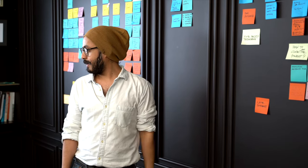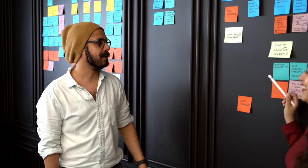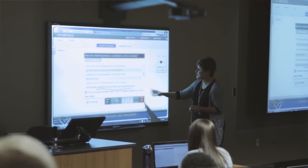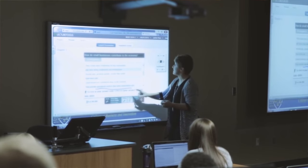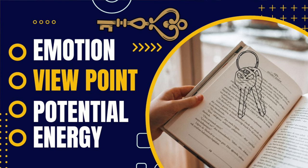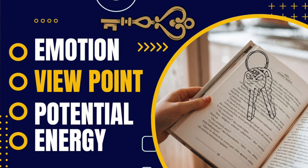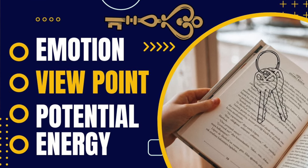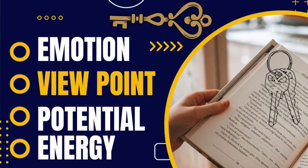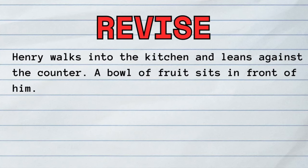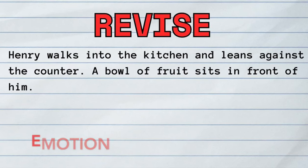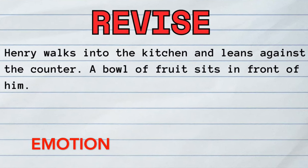So what are the solutions to these problems? A good starting place is to incorporate at least one of these three keys to memorable description: emotion, viewpoint, or potential energy. Returning to our earlier sentence, let's take a look at emotion first.